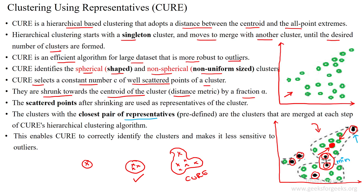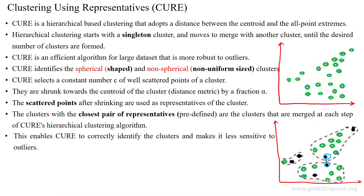These two data points are having minimum distance between them. Because of this minimum distance of reference points, we can combine these two clusters into a single cluster. The other data points are not having the minimum distance, so based upon the hierarchical clustering algorithm we apply the merging of clusters one by one until we reach the expected number of clusters.